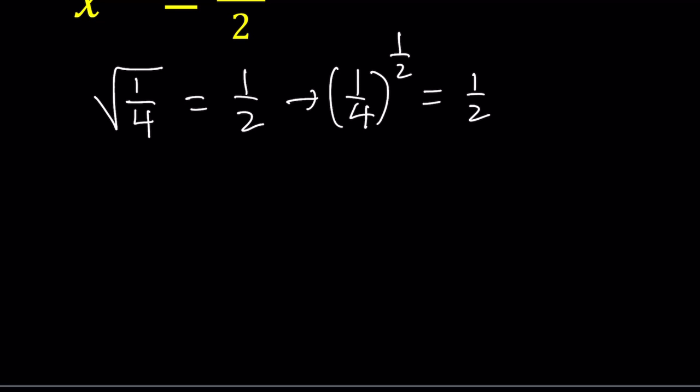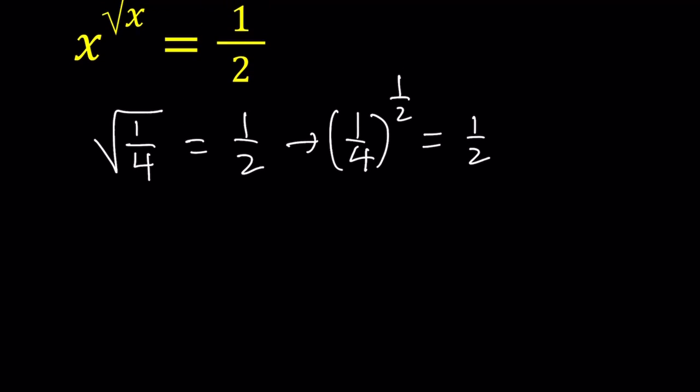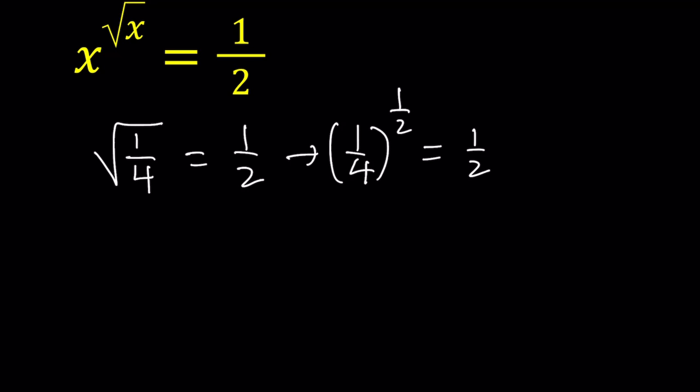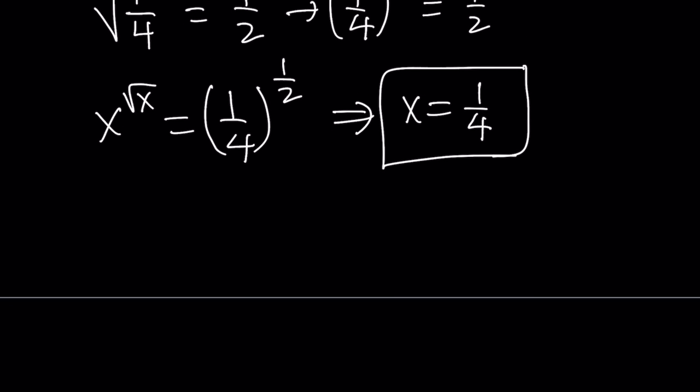Square root can be written as something to the power one half. So I can write this as one fourth to the power one half and that gives me one half. This is significant because on the left-hand side, we have x as a base and square root of x as the exponent. If x is one fourth, its square root is one half. So if x to the power square root of x equals one fourth to the power one half, I have a match, which means if x equals one fourth, this is true. At least we know x equals one fourth is a solution.